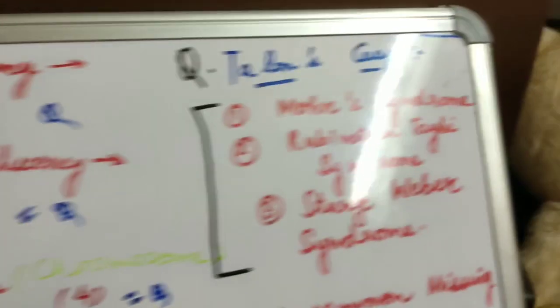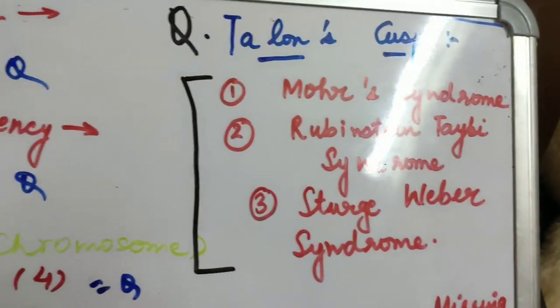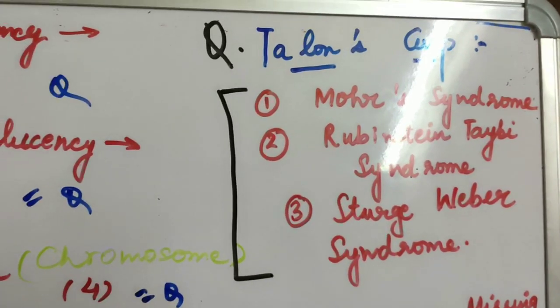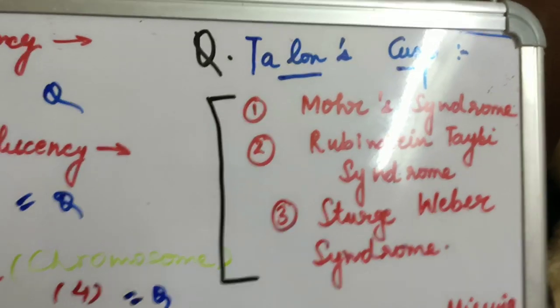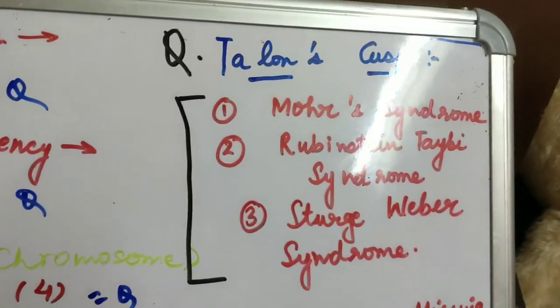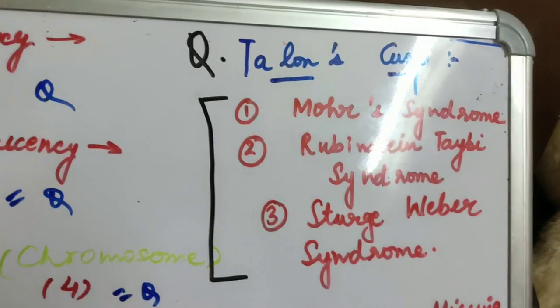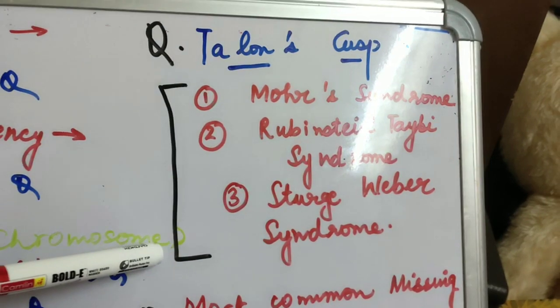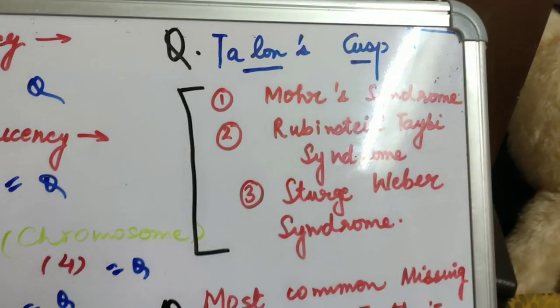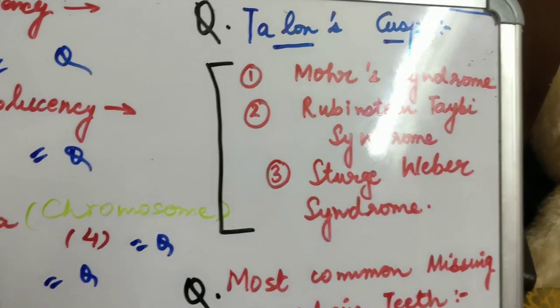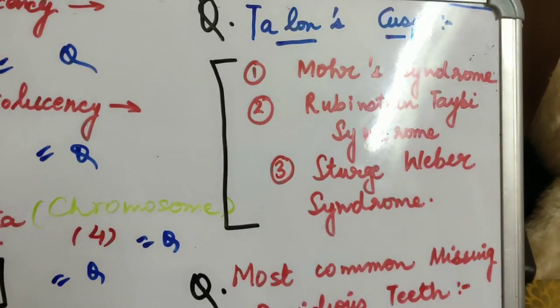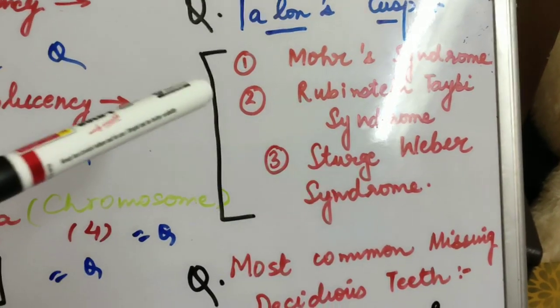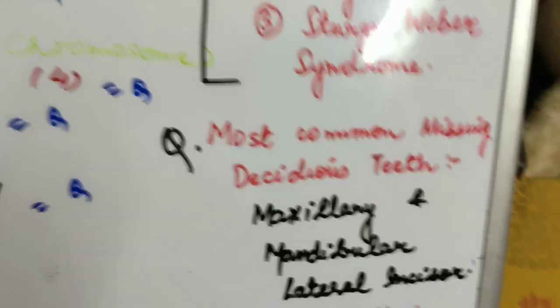Next question that is very important is about talon's cusp. Now this question won't come directly. It will ask which syndromes are associated with talon's cusp. The three main syndromes associated with talon's cusp are Moore syndrome, Robinston Tabby syndrome, and Stugger Weber syndrome. A question may come giving a fourth syndrome asking which syndrome is not associated with talon's cusp. Now you know about these three syndromes mainly associated with talon's cusp, so you can mark the right option.